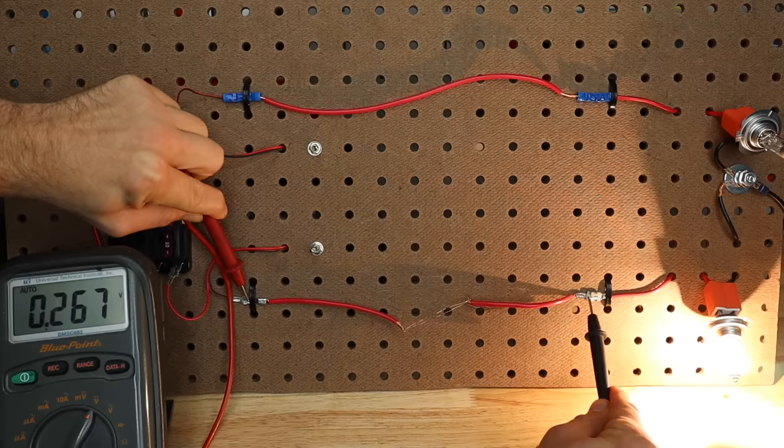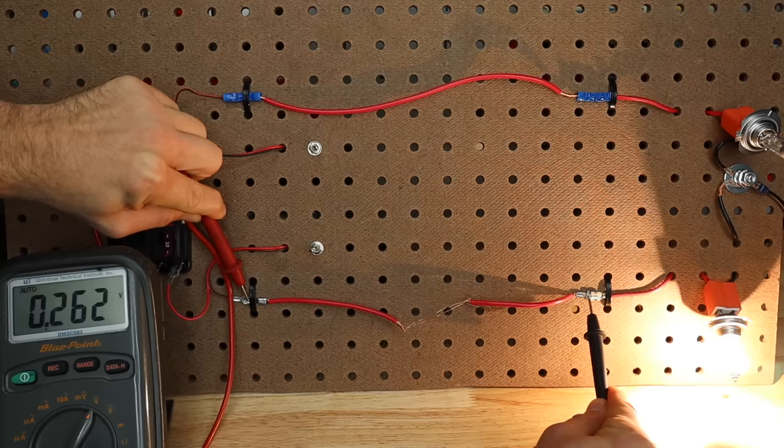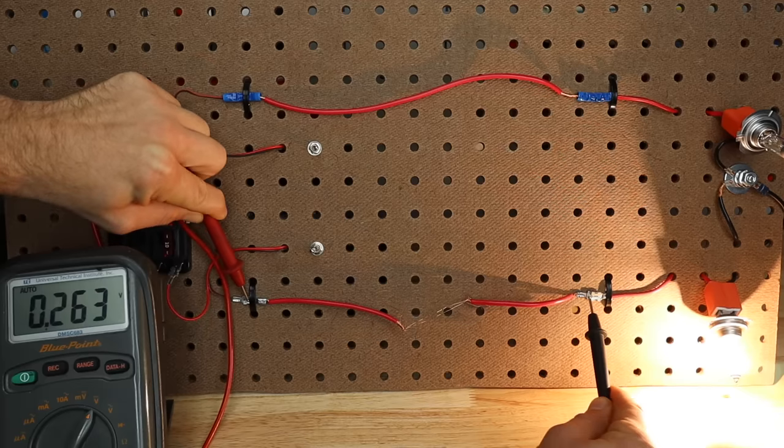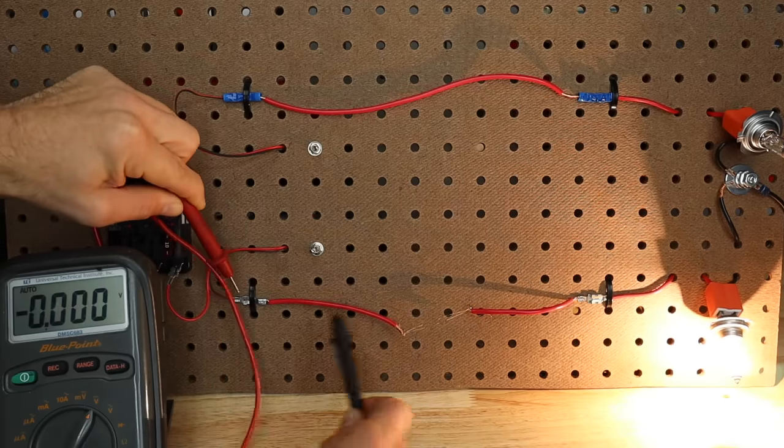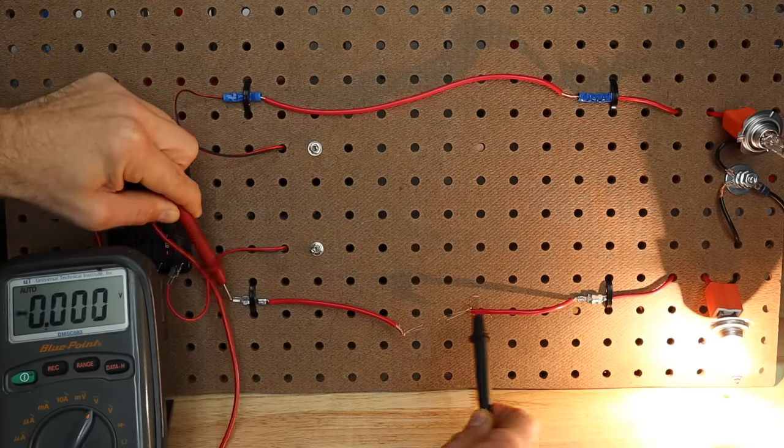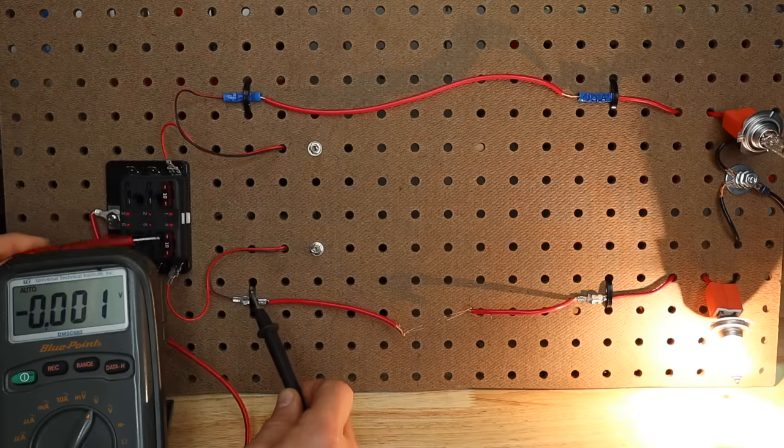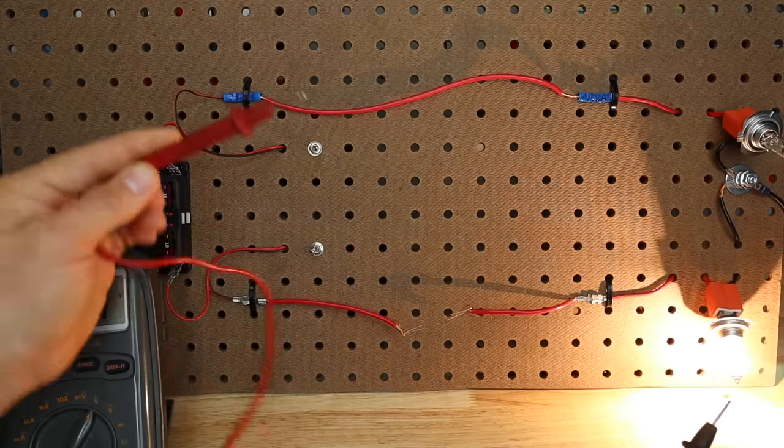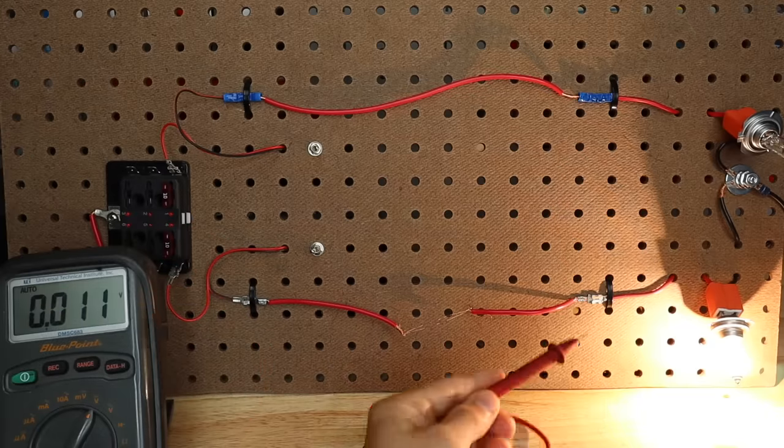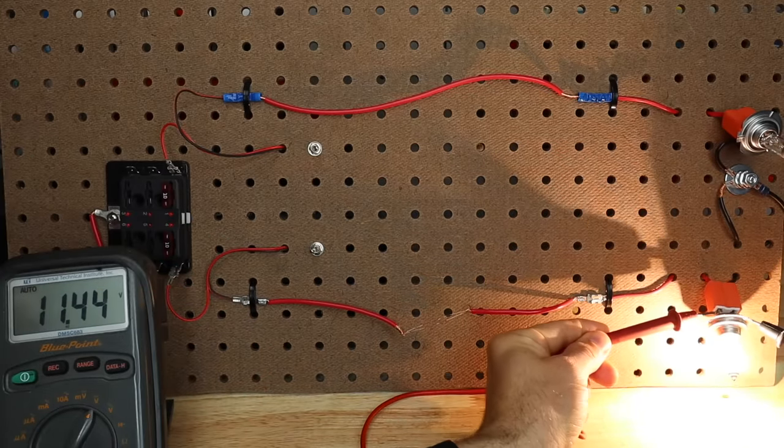And the reading that we get is our voltage drop or how much voltage potential is lost through the circuit between where we have our meter leads. So we're only testing this small section of wire. We could also do the same thing for our switch or our fuse or our load itself.